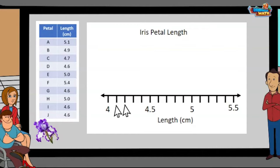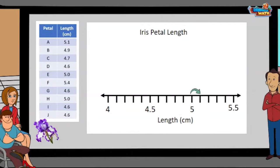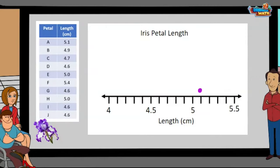Now we will start plotting the information. The first measurement is five and one tenth, we will go to the five and count over one tick mark and place the dot there. Four and nine tenths, start at the four and count over nine tick marks.